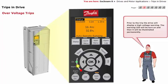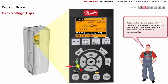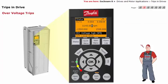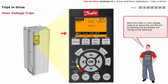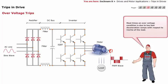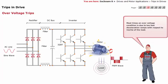Prior to the trip, the drive will display a high-voltage warning. The warning LED will be turned on and illuminated permanently. When under or over-voltage leads to an alarm, the red LED will be flashing and the display will change accordingly. Most times, an over-voltage condition is due to too fast deceleration ramps with respect to the inertia of the load. During deceleration, the inertia of the system acts to sustain the running speed.